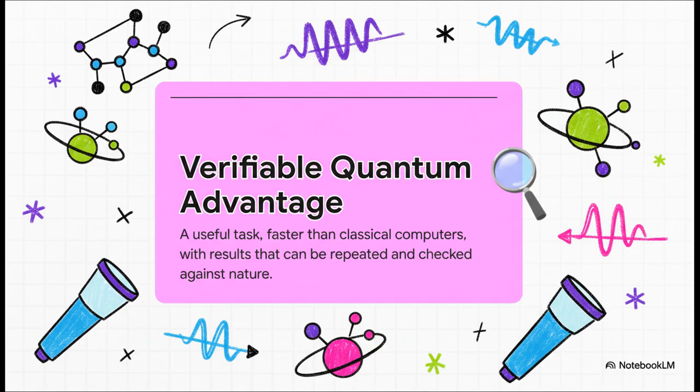This right here is the new gold standard. It's one thing to solve some weird abstract math problem that no one can even check. It's a whole other thing to solve a genuinely useful scientific problem and then be able to prove your answer is right by comparing it to what happens in nature. That is a huge, huge shift in the game.